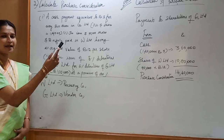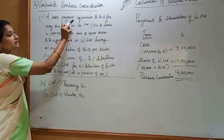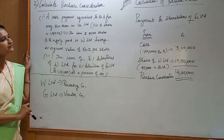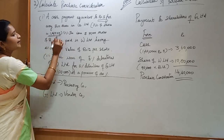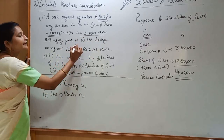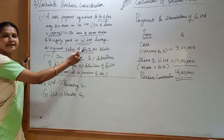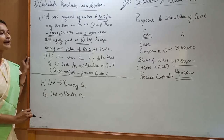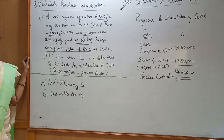Any payment made to the shareholders of the vendor company G Limited is the purchase consideration. The first payment is a cash payment equivalent to rupees 3 for every share in G Limited, and number of shares in G Limited is 1,20,000. The next form of payment is issue of 90,000 shares by W Limited having a face value of rupees 10 fully paid at an agreed value of rupees 12 — we should always take only the agreed value. As per Accounting Standard 14, payment to debenture holders should not be considered for calculating purchase consideration.